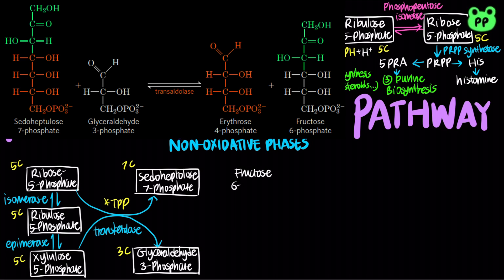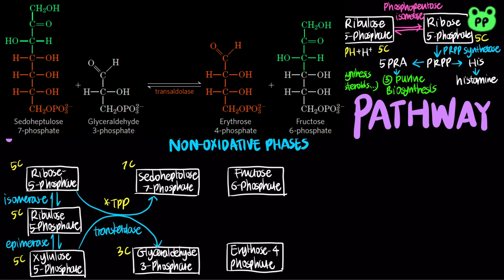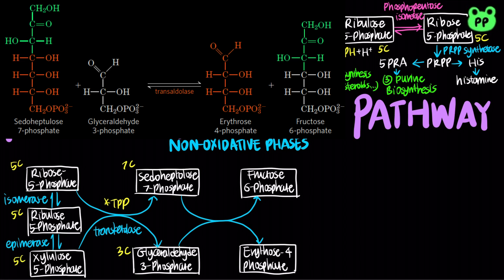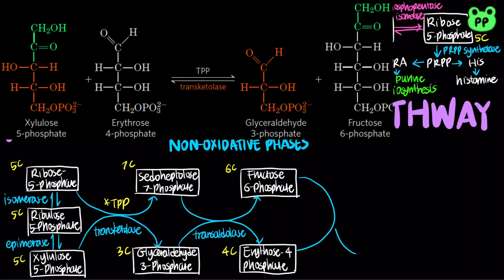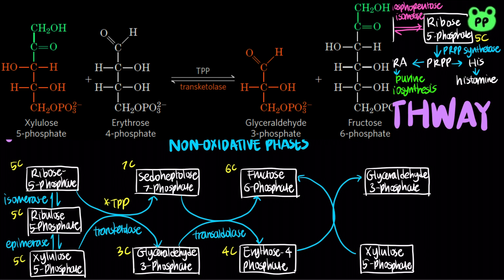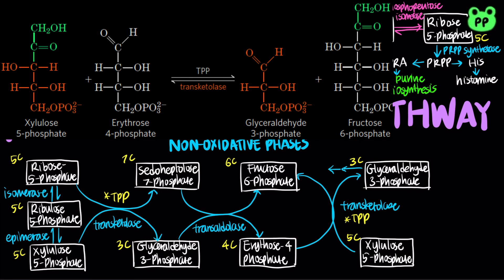Next, transaldolase catalyzes the conversion of sedoheptulose 7-phosphate and glyceraldehyde 3-phosphate to fructose 6-phosphate and the tetrose erythrose 4-phosphate. Then, transketolase acts again, converting erythrose 4-phosphate and xylulose 5-phosphate to fructose 6-phosphate and glyceraldehyde 3-phosphate.